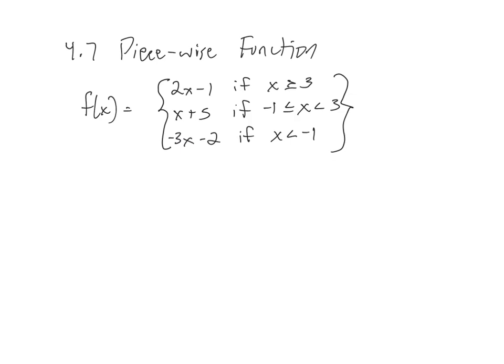So if I was going to do, let's say, f of 4, I'm going to plug in 4. I'm going to use the top one if the number I'm plugging in, x, is greater than or equal to 3. Since 4 is greater than 3, I'm going to plug it into the 2x minus 1 part. So instead of x, I put 4, and we get 7.